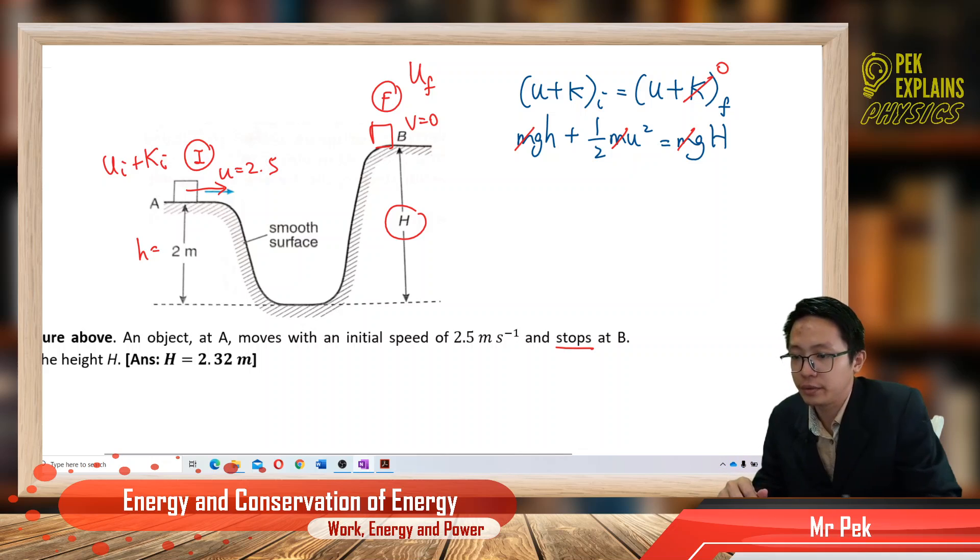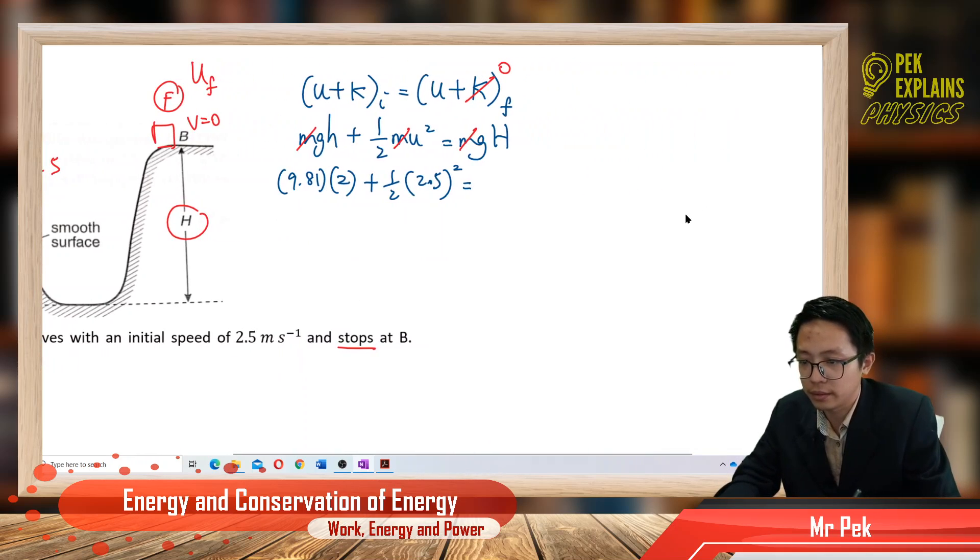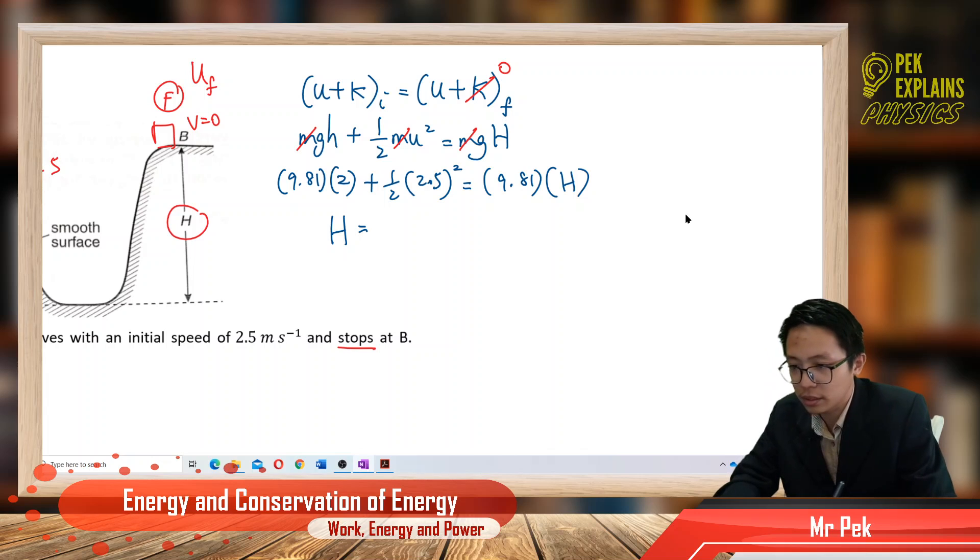Then substitute all the values. The g is 9.81, the h initial is 2, plus half u is 2.5, 2.5 squared, and then the g here again, 9.81 times the big H. So we get our big H, which is 2.32 meters.